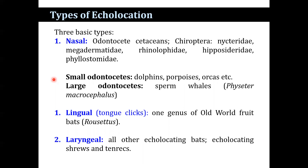The echolocating families include Megadermatidae, Rhinolophidae, Hipposideridae, and Phyllostomidae. Among small odontocetes that perform echolocation are dolphins, porpoises, and orca, while large odontocetes such as sperm whales also use echolocation.